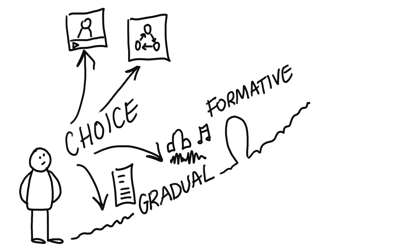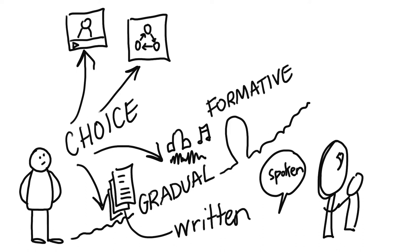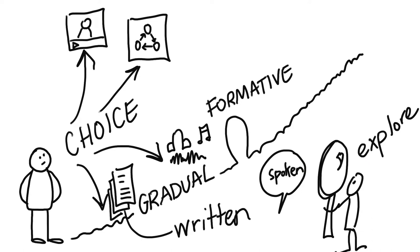For example, offering the choice of written word, spoken word, or visual modes for self-introductions is a low-stakes way for students to explore different formats early in the learning experience. It allows learners to adjust and acclimatize to multiple means of action and expression before engaging in higher-stakes assessment.